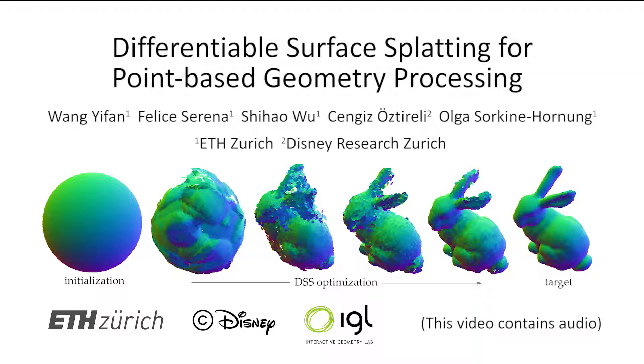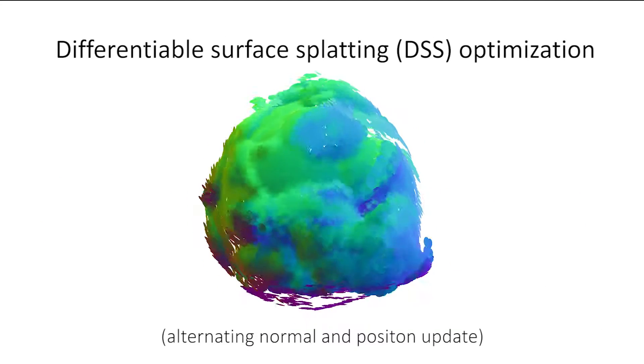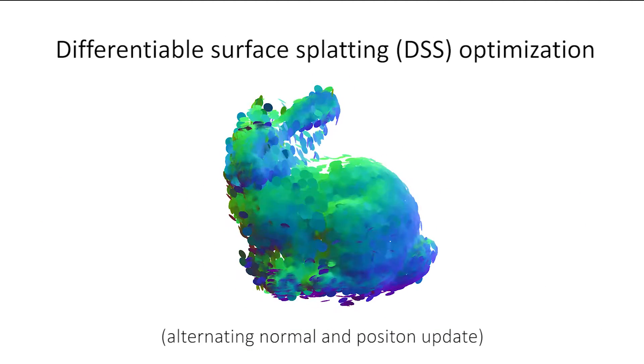We propose Differentiable Surface Splatting, a high-fidelity point-based differentiable renderer for point-based geometry processing. It provides high-quality renderings of point clouds in a fully differentiable framework.